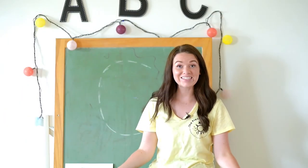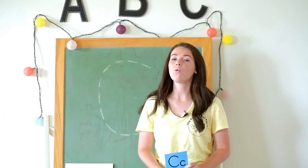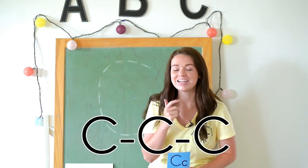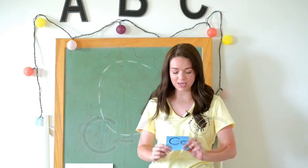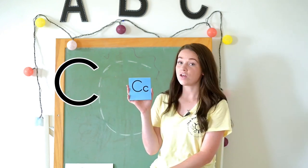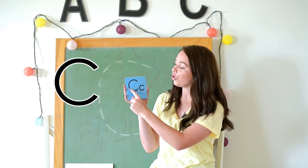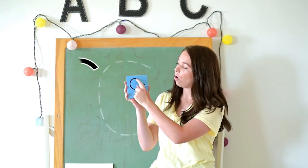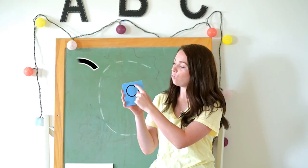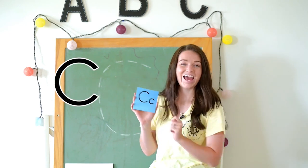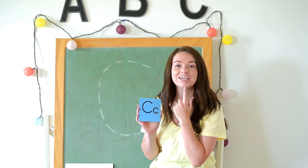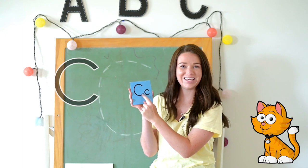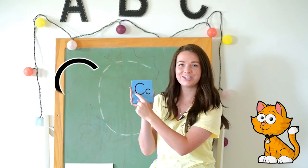That was so fun to learn about the letter C. Now that we know what sound the letter C makes, are you ready to trace it with me? This is the letter C — the letter C has a curve on it. Can you trace the letter C with me? Around, curve C. Let's see cats — meow. Around, curve C.